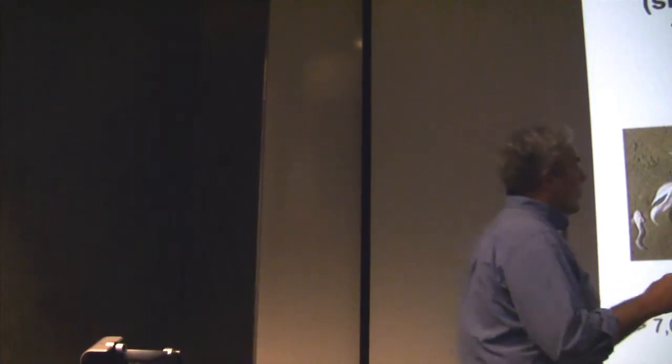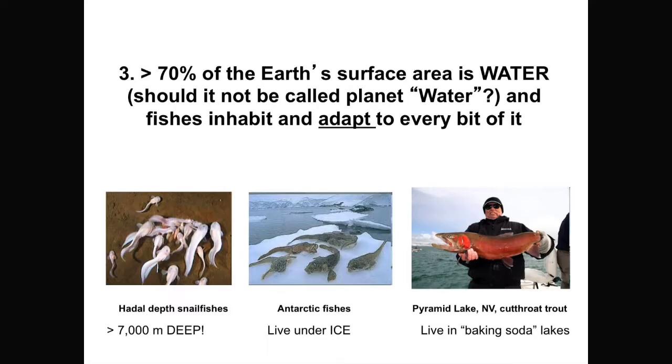This is a Lahontan cutthroat trout from some of the soda lakes in southwestern Nevada. And these lakes taste like baking soda. Typically we think of a lake as a pH around 7. These things live in a lake that has a pH of almost 8. You taste it, it tastes like baking soda. Three examples of amazing adaptations to very different environments.